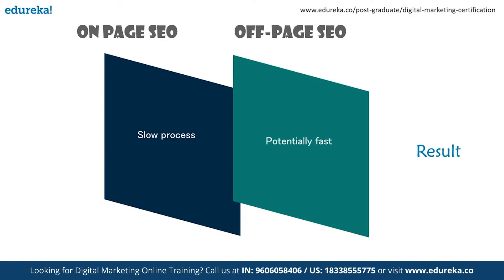Generally, both on-page and off-page solutions are implemented together to improve search engine placement. Google ranks websites using two of the most important signals: high-quality page content and link building. This reflects the shared value of both on-page and off-page SEO, and combining them in your digital marketing strategy would truly change your results. Focus on both if you are into digital marketing.